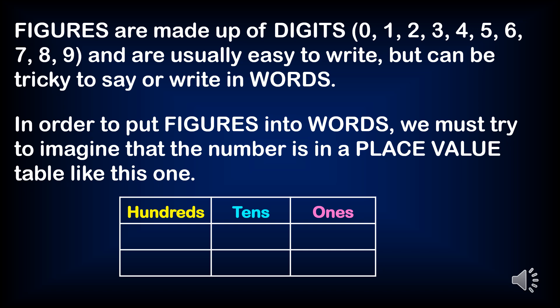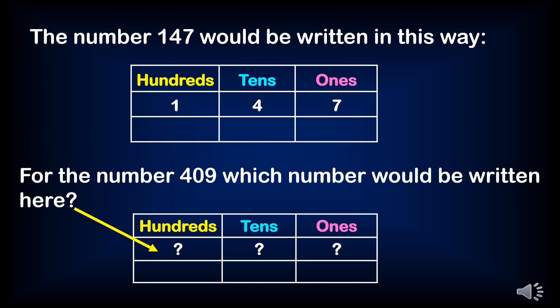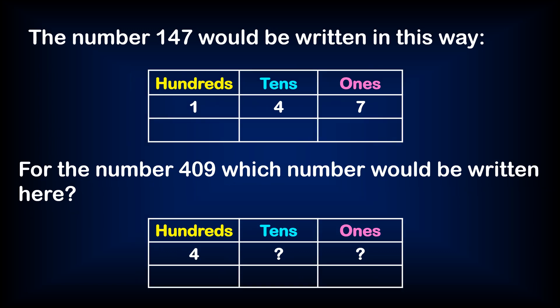Ones, tens, hundreds. The number 147 would be written in this way. Seven is in ones place. Four is in tens place. And one is in the hundreds place. For the number 409, which number would be written here? 409.